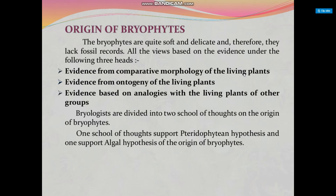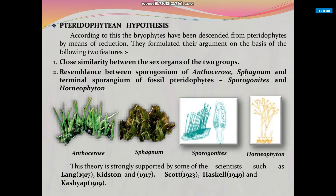Bryologists are divided into two schools of thought on the origin of bryophytes. One school supports the pteridophytian hypothesis and the other supports the algal hypothesis. According to the pteridophytian hypothesis, bryophytes have descended from pteridophyta by means of reduction. This argument is based on two features: close similarity between the sex organs of the group, and resemblance between the sporogonium of Anthoceros and Sphagnum and terminal sporangia of fossil pteridophytes such as Rhynia and Horneophyton.